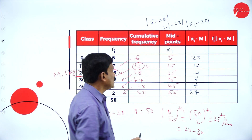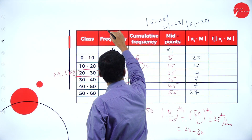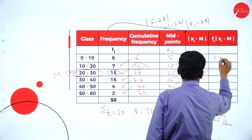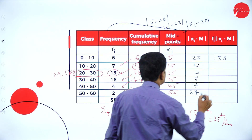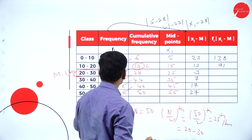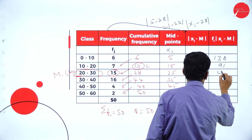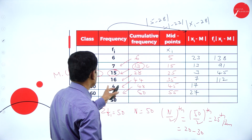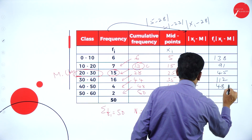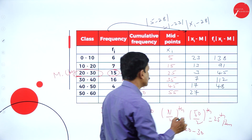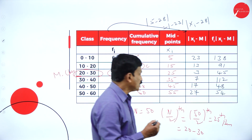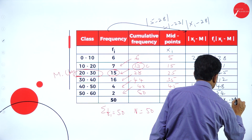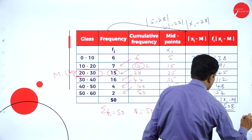Now find Fi into mod Xi minus M. Multiply each frequency with the corresponding deviation: 6 into 23 is 138, 7 into 13 is 91, 15 into 3 is 45, 16 into 7 is 112, 4 into 17 is 68, and 2 into 27 is 54. Adding all these values, sigma Fi mod Xi minus M is equal to 508.